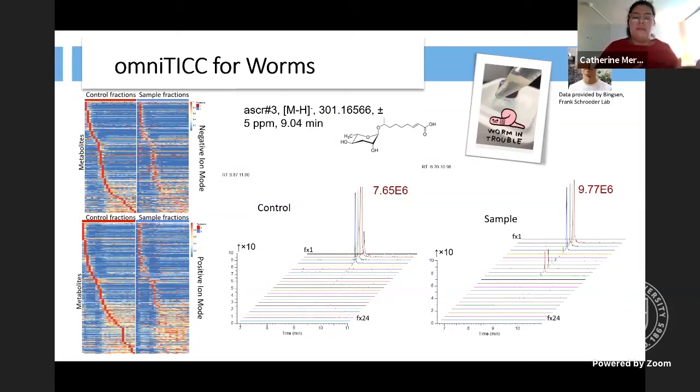And when we look at this, we have worms performing OmniTIC. So on the left side, we have more heat maps, kind of just distinguishing where we see differences in the control and sample fractions, once again, of different metabolites. We have the negative ion mode and positive ion mode, which are just different detection methods for the mass spec. So one of these that Vincent provided the data for, that they're interested in, is ascarylose 3, which is a worm hormone. And we can see from the graph that from the control to the sample that we get peaks in later fractions, indicating that there's probably a PMI in that fraction.